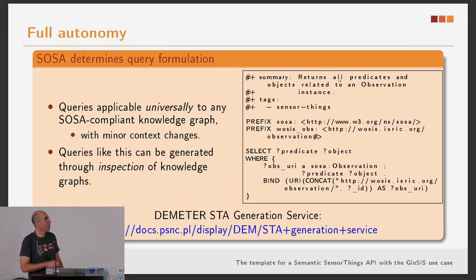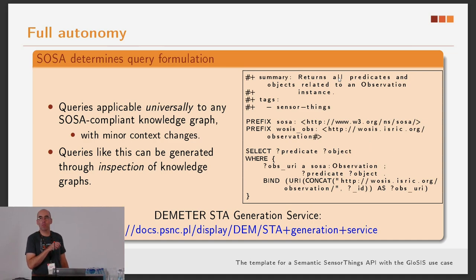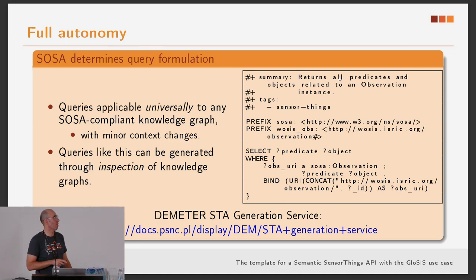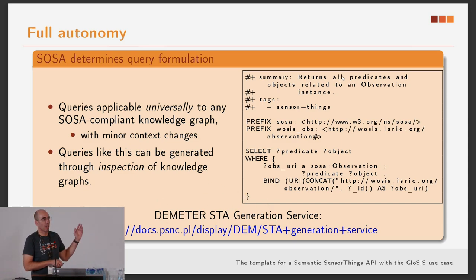If you know SPARQL and look closely at this query, you can see that most of it is universal. With some small changes, this query would apply to any kind of knowledge graph that uses the SOSA ontology. Things such as 'SOSA observation' are universal for any knowledge graph complying with this ontology. Within the Demeter project — an EU-funded project — colleagues at the Poznan Computing Center are developing a tool that can already inspect a knowledge graph complying with this ontology and automatically, without any other intervention, generate a REST API compliant with the SensorThings specification.